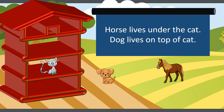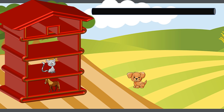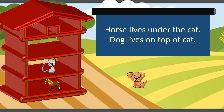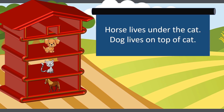I have placed the cat first. Let's try and see if the other animals fit as per our clue. As per the first sentence, horse lives under the cat — I have placed horse under the cat. As per the second sentence, dog lives on top of cat — I have placed the dog on top of cat. Now both the sentences are correct as per our positions of the animals. That's great!